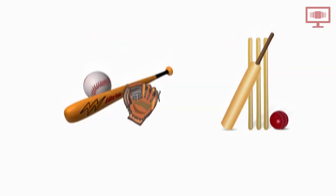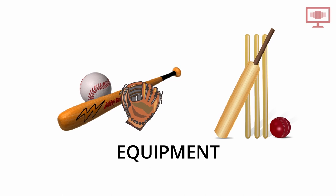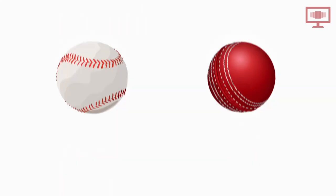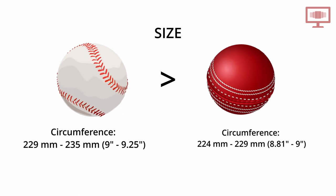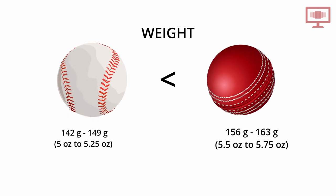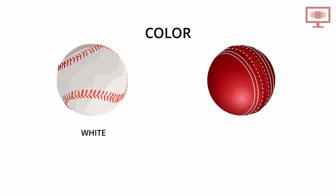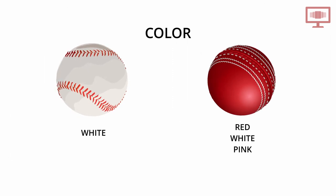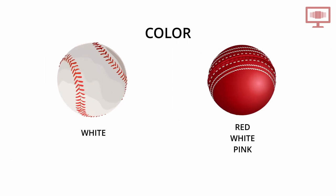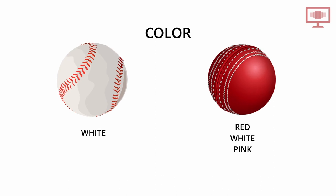First, the equipment. A baseball is typically larger than a cricket ball, whereas a cricket ball is heavier than a baseball. A baseball is usually always white in color, whereas a cricket ball can be either red, white, or pink depending on the format of the match and the time of day.